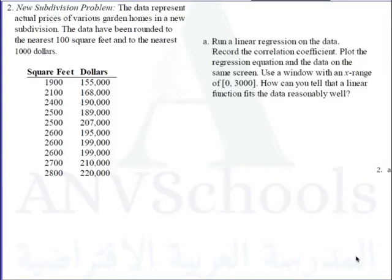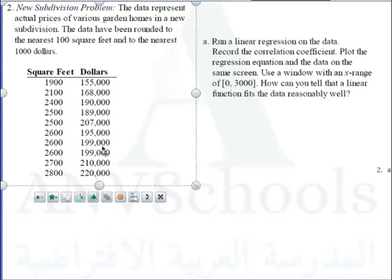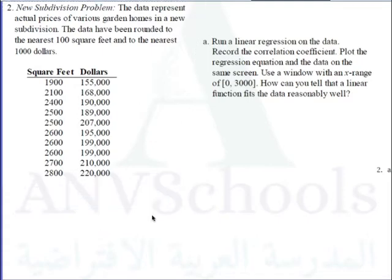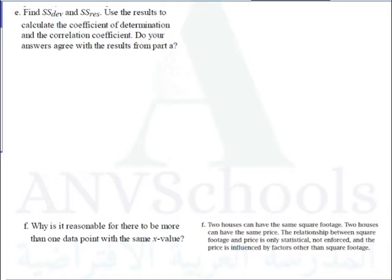Now let's go to letter E of the new subdivision problem. The data represents actual prices, so we're going back to the data — the square feet and the dollars. For letter E, find SSdev and SSres. These are the sum of the squares of the deviation and the sum of the squares of the residuals. Use the results to calculate the coefficient of determination and the correlation coefficient.